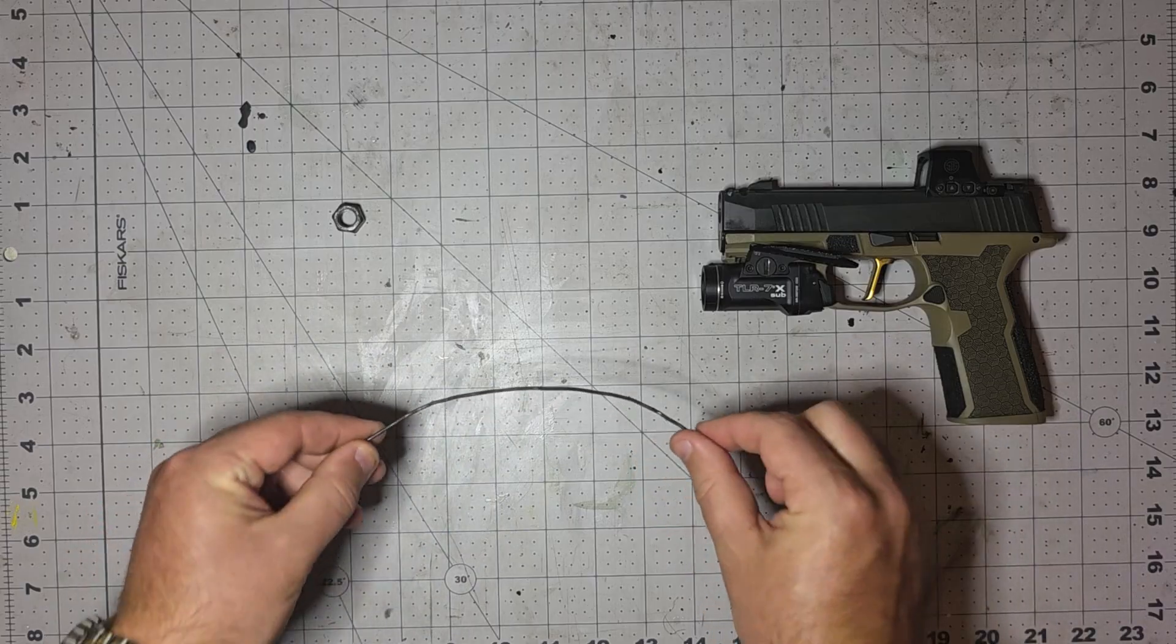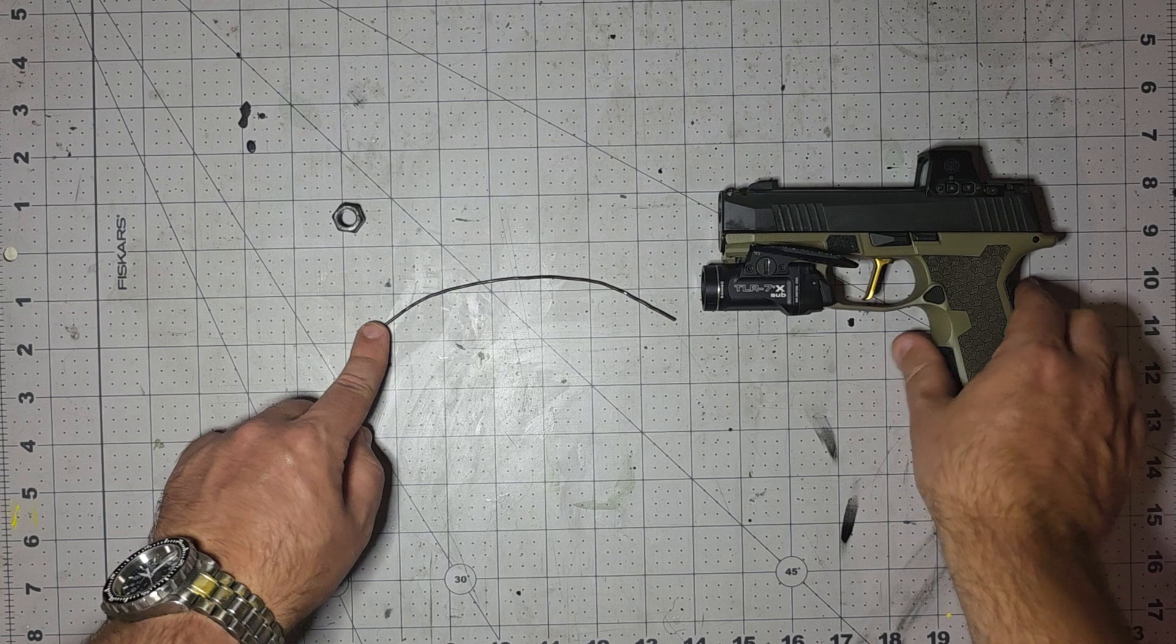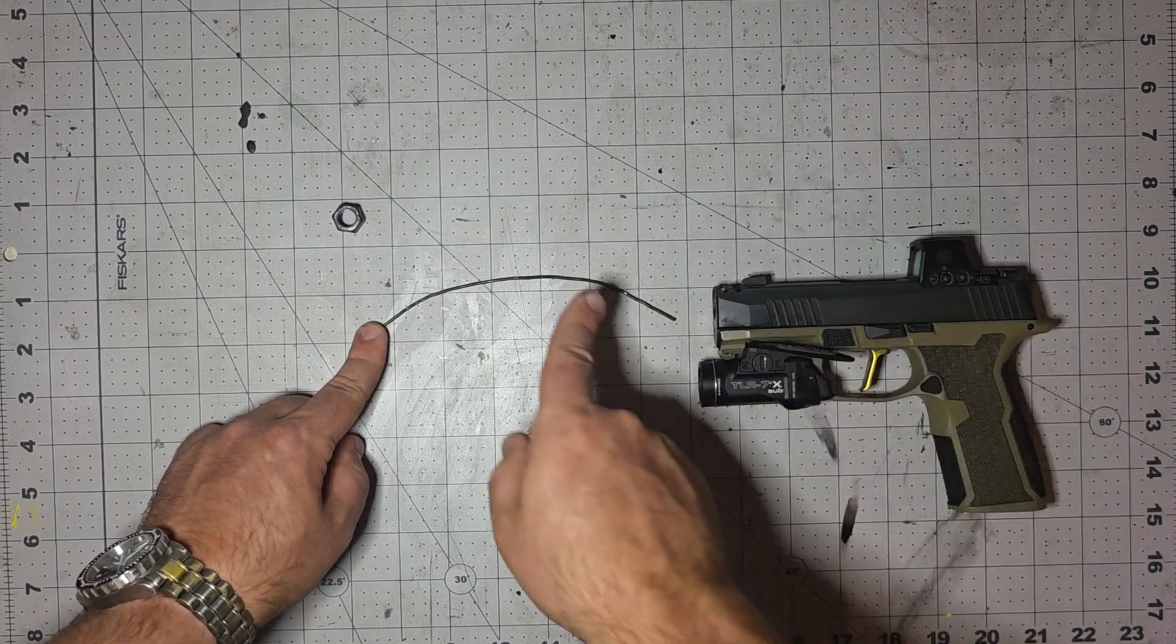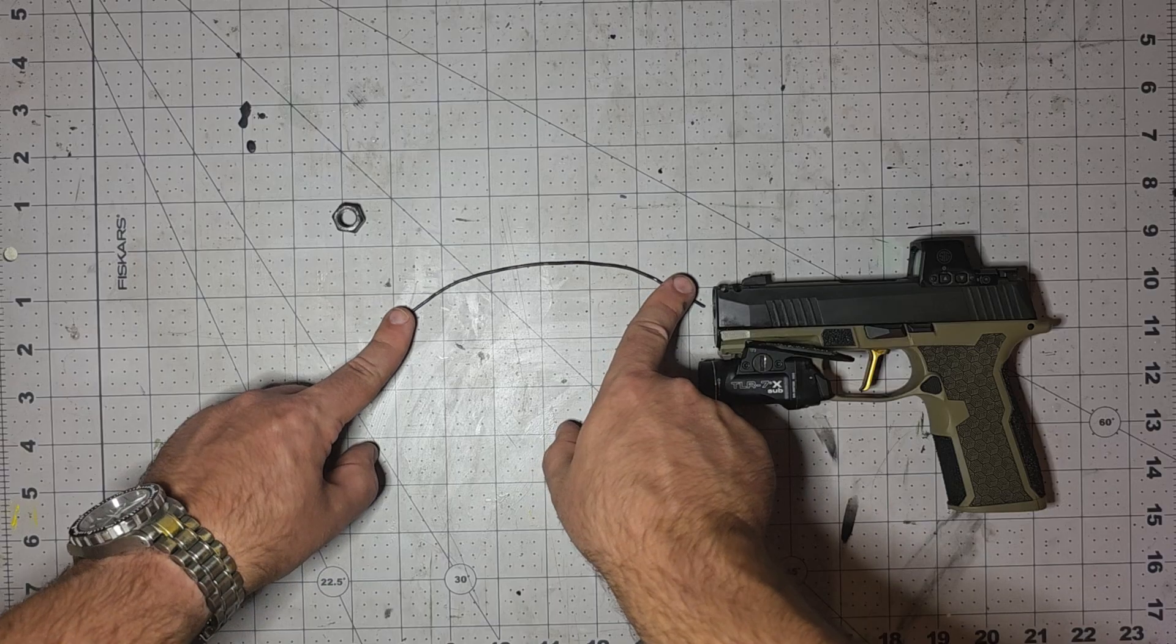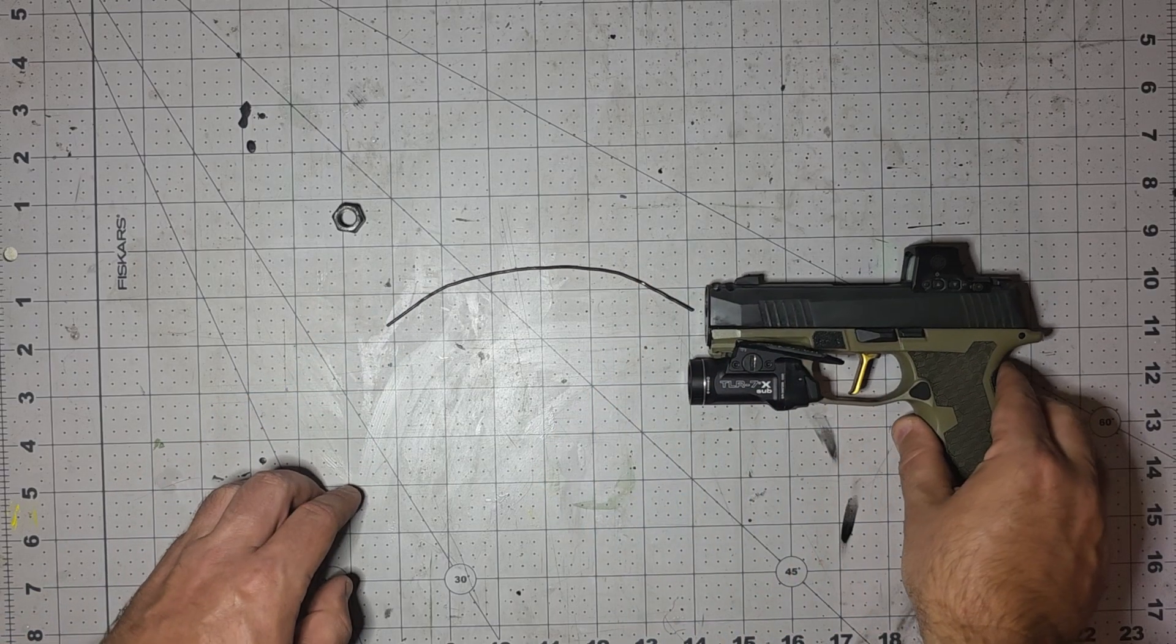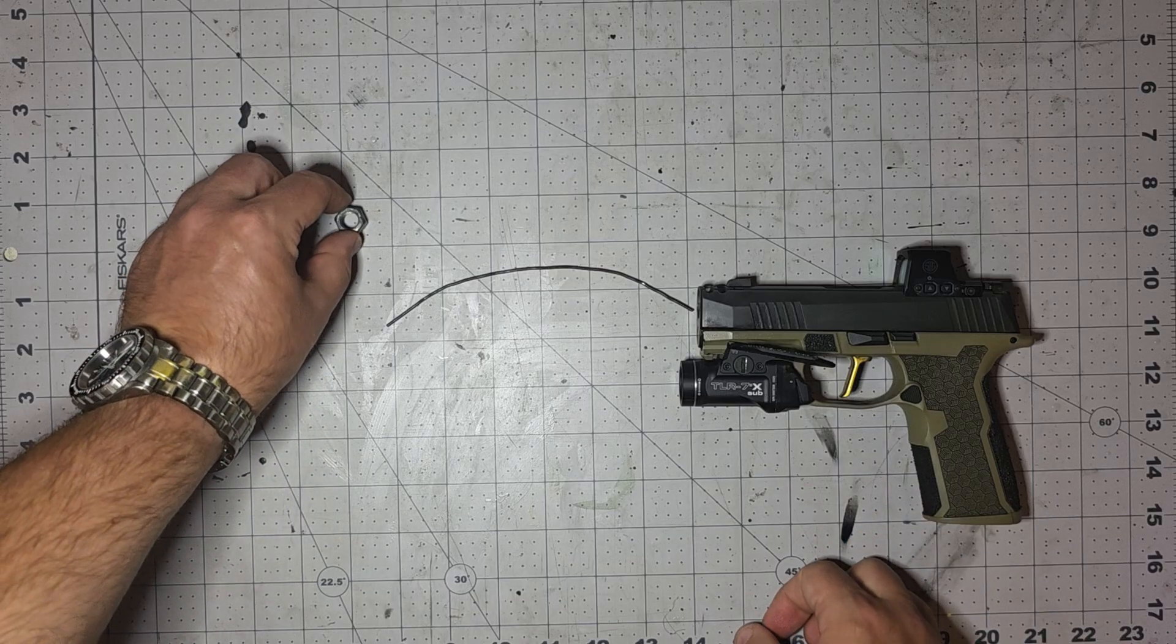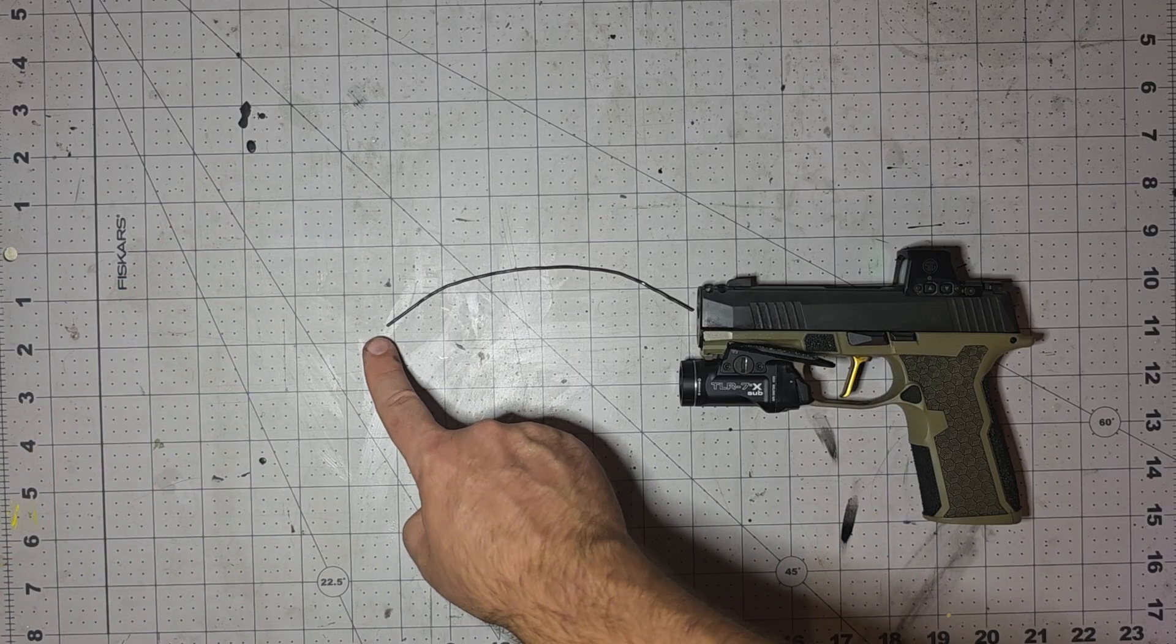I have now changed the trajectory of the bullet to an arc. And for us math nerds, we're going to call this a parabola. The bullet leaves the barrel of the gun right here. And this no longer is our target. This is it hitting the ground.